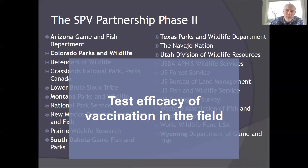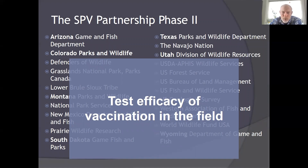That led us to Phase 2, what we called the field efficacy trials. This was a really large, multi-disciplinary cooperative group. The trial was conducted in over seven states with state, federal, tribal, and even municipal partners — a huge effort by everybody to move this project forward.